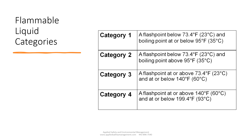Category 2 has a flashpoint below 73.4 degrees Fahrenheit and a boiling point above 95 degrees Fahrenheit. Category 3 is where we switch gears and look at flashpoint only — a flashpoint at or above 73.4 and at or below 140 degrees Fahrenheit. Category 4 has a flashpoint at or above 140 degrees and at or below 199.4 degrees Fahrenheit.